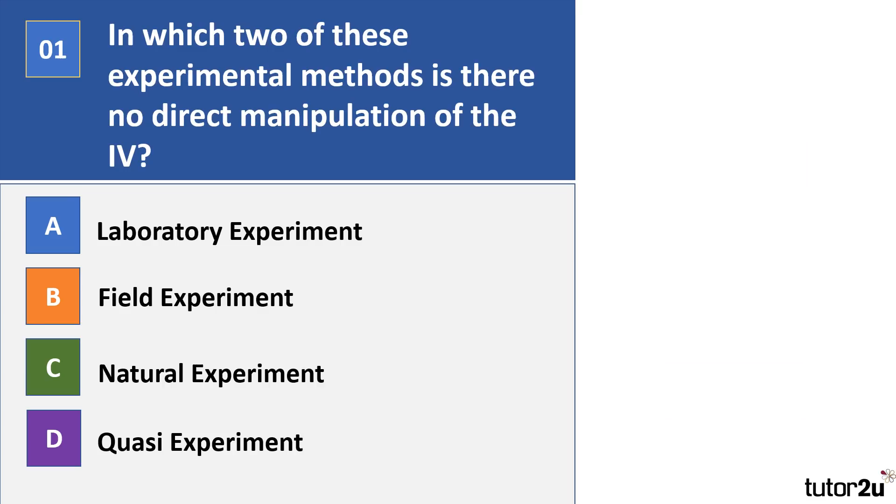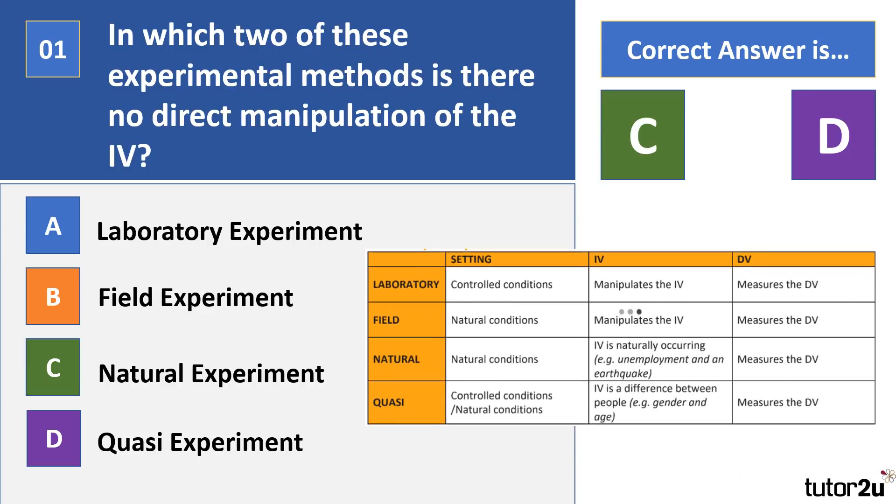Let's get started with question one. In which two of these experimental methods is there no direct manipulation of the independent variable? Pause the video, have a read through, and decide your answer. Okay, so the correct answer, I hope you read the question because I did ask for two, was C and D.